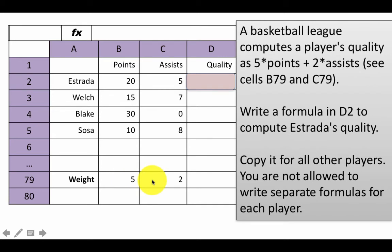So, the assumptions five and two are here, right? So, write a formula in D2 to compute this Estrada player's, the player on row two, that player's quality. And then copy it for all other players, right? And I'm saying here, you're not allowed to write separate formulas for other players. You are to write only one formula and when you copy that formula, it is supposed to work for all players, no matter if you have five players or three hundred players or a thousand players. So, sit back, pause the video, write your formula and then continue the video to see what the answer is.